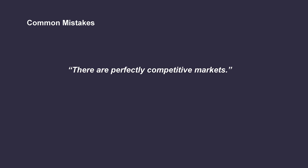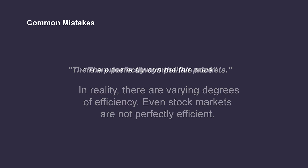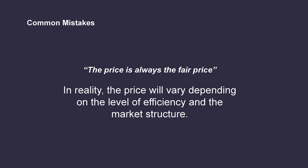But attention — there are some common mistakes here. First mistake: there are actually no perfectly efficient markets in reality. Fama made a hypothesis. In reality, there are always varying degrees of efficiency, and even stock markets are not perfectly efficient. Second mistake: the price is not always the fair price. In reality, the price will vary depending on the dispersion of information and the market structure.